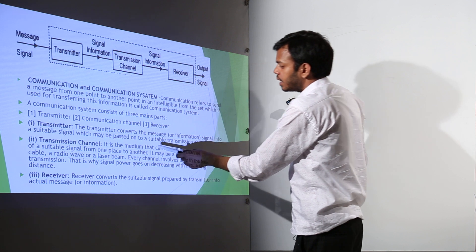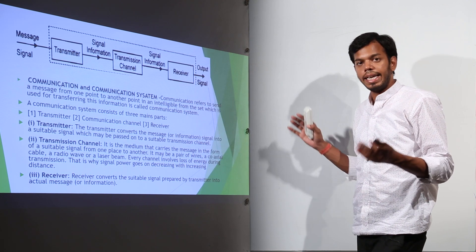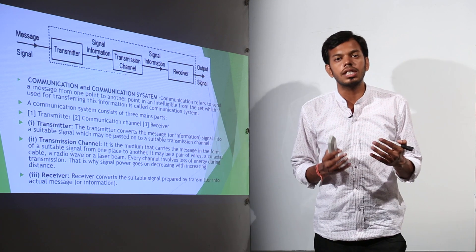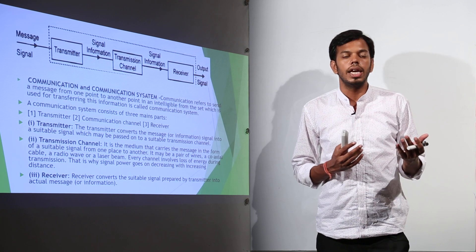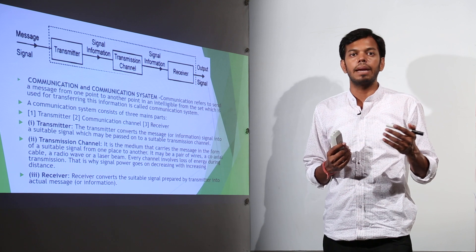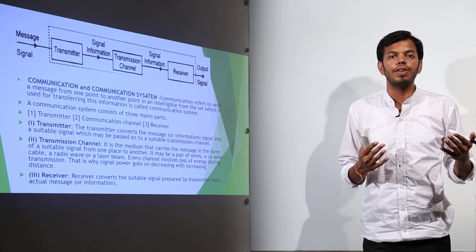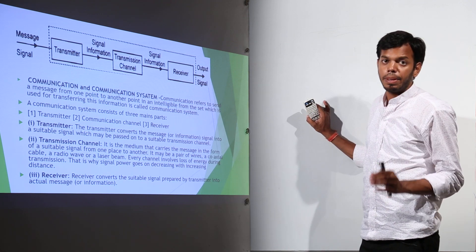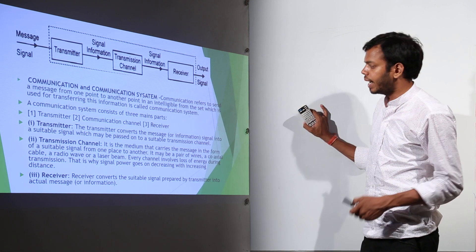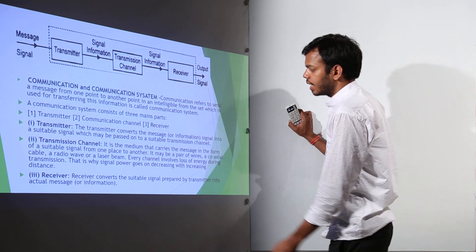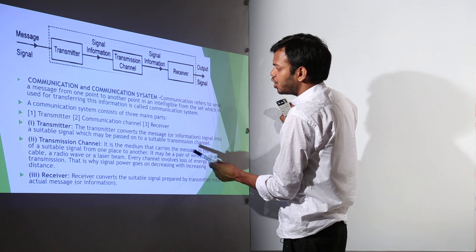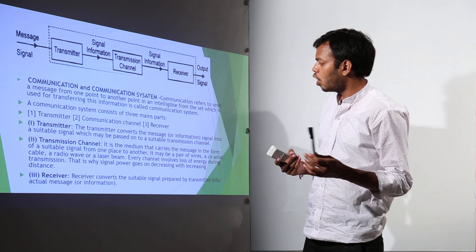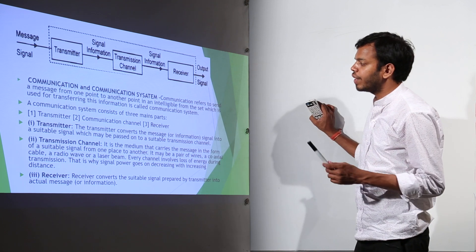A transmitter converts the message into a suitable form and transmits it to the communication channel. The channel is the medium through which the signal travels — it can be wires, optical fibers, or simply space, because electromagnetic waves can be radiated into space and received by a receiver. The transmission channel carries the message from one place to another; it may be a pair of wires, coaxial cable, radio wave, or a laser beam.